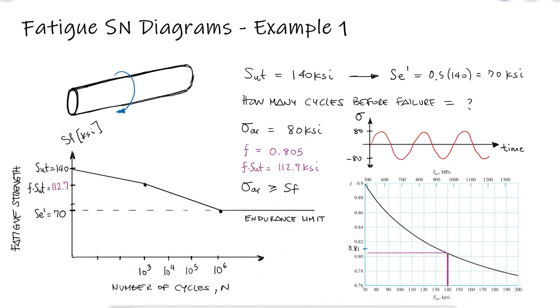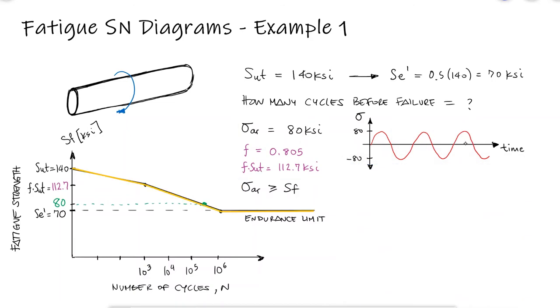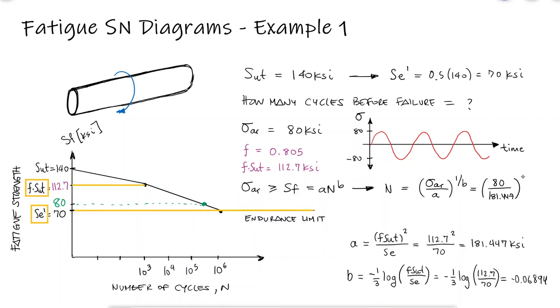Since the part will fail when the alternating stress reaches or exceeds the fatigue strength, and since the fatigue strength is given by the expression A times N to the B for cycles between 1000 and 1 million, we know we can solve for the number of cycles if we know the A and B coefficients that we already know depend on F times Sut and the endurance limit.